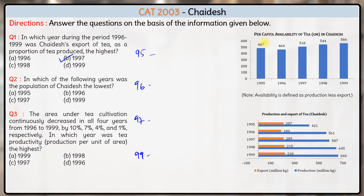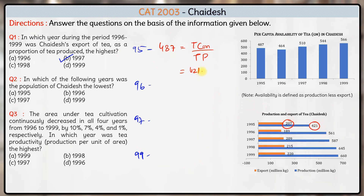Per capita availability of 487 grams equals total amount consumed divided by total population. Total consumption is production minus exports — so 421 minus 207 — which is in million kgs. We convert this to grams by multiplying by 1000, giving million grams. So the population equals consumption in million grams divided by 487 grams per person. Out of 214 million kgs consumed, every person got on average 487 grams.